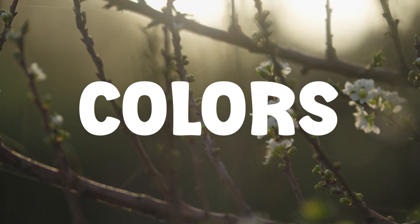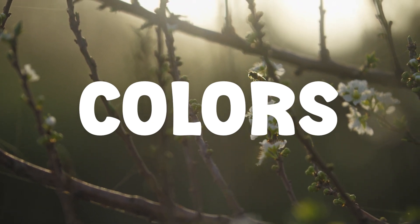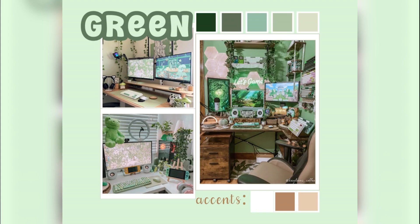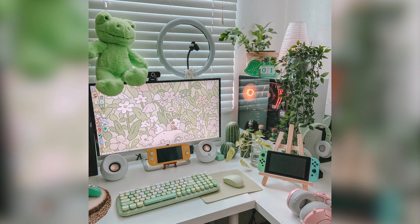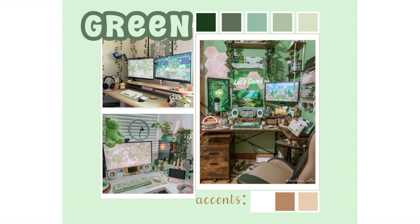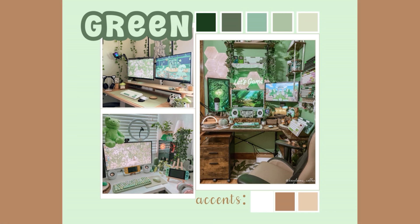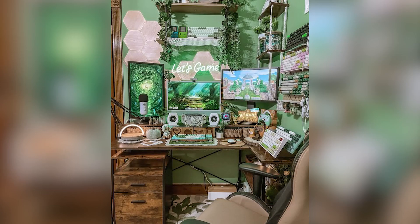Next we're going to look at some of the individual colors used — in particular the main colors people use and then the accent colors they use to decorate. Green is super popular for cottagecore gaming setups. Greens can range from very dark emeralds to very light sage and olive type greens. Some of the most common accents are colors like white, brown, and neutrals such as tan or cream.